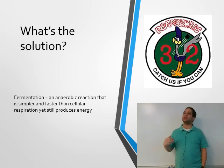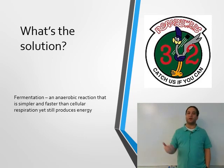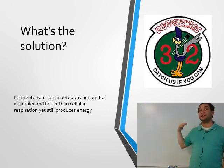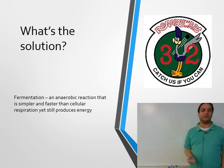Fermentation is an anaerobic process that's fast and simple - which is why there's a picture of the roadrunner, because he's both fast and simple.